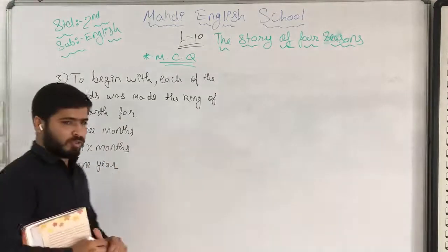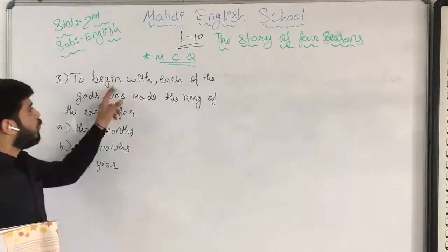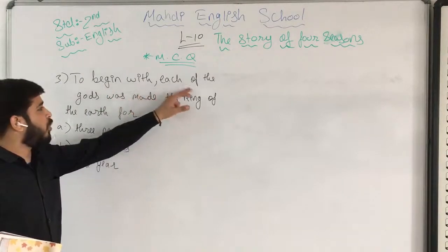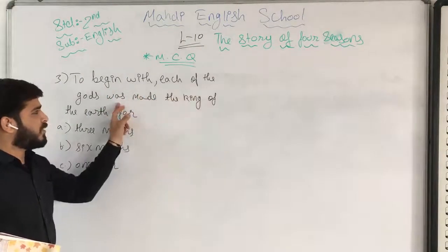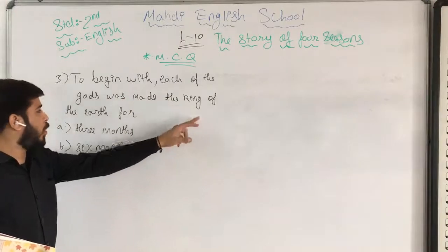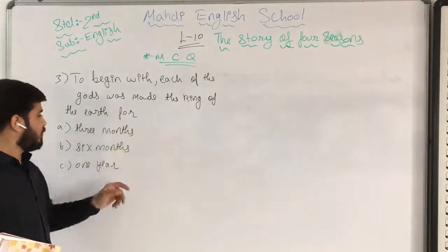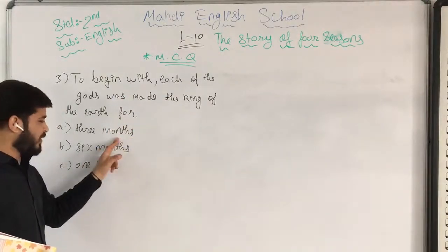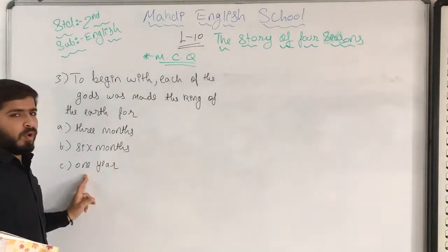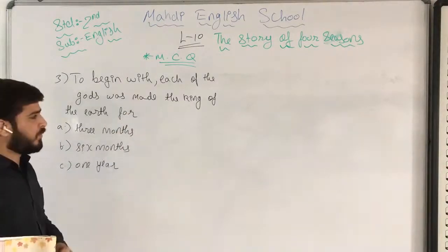As you can see, I have written question number 3: each of the gods was made the king of the earth for — options are 3 months, 6 months, or 1 year. Please start writing it.